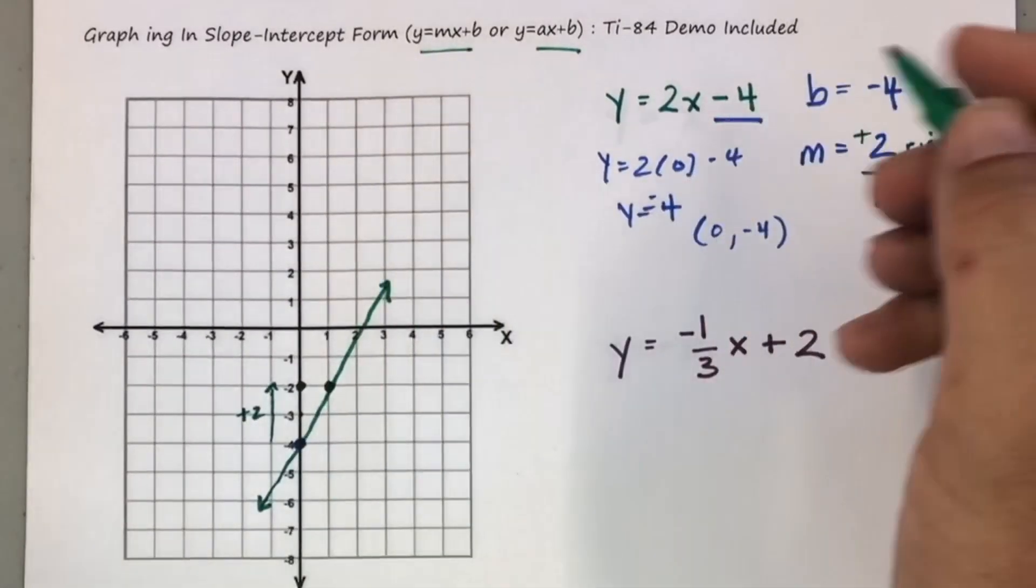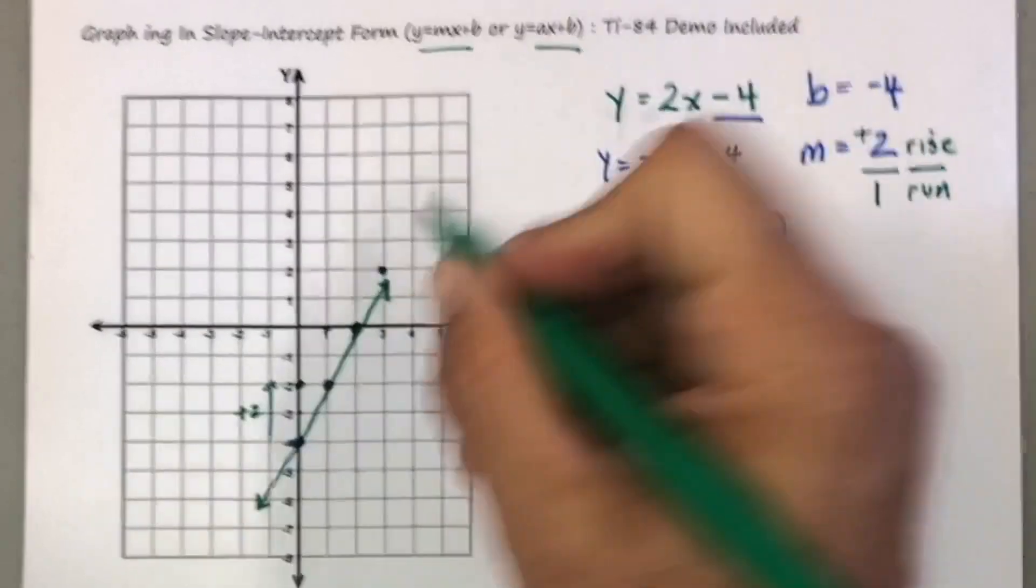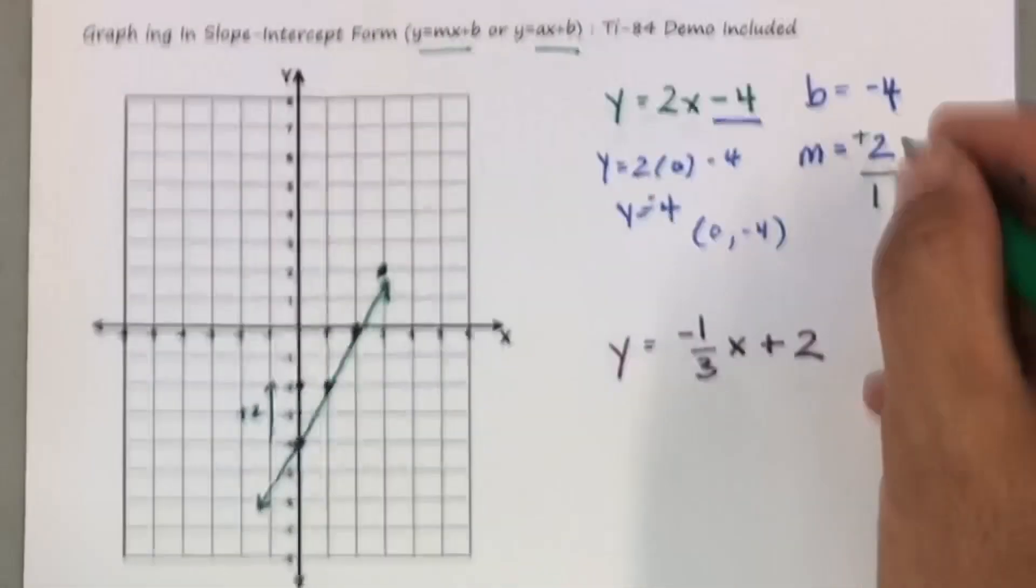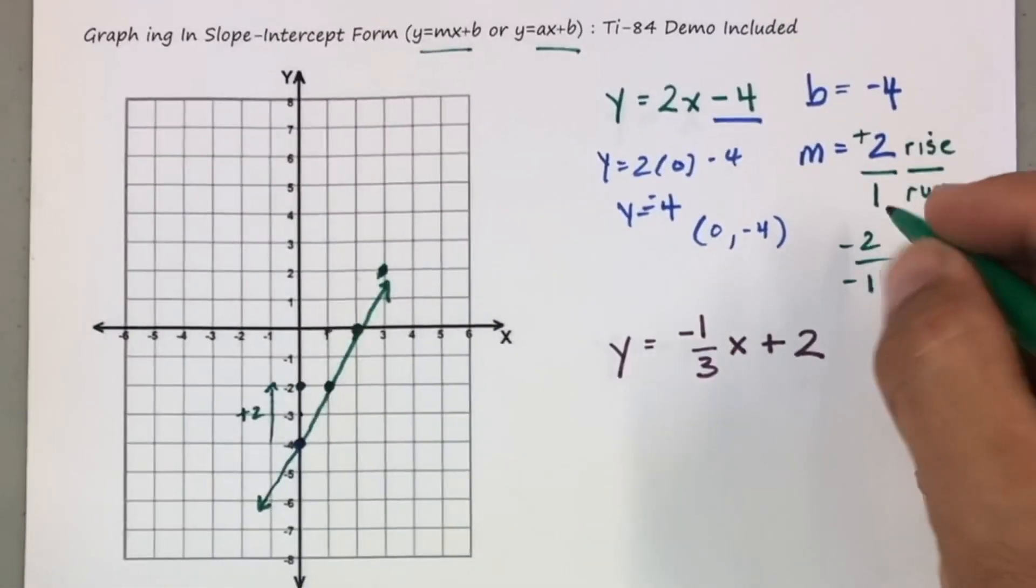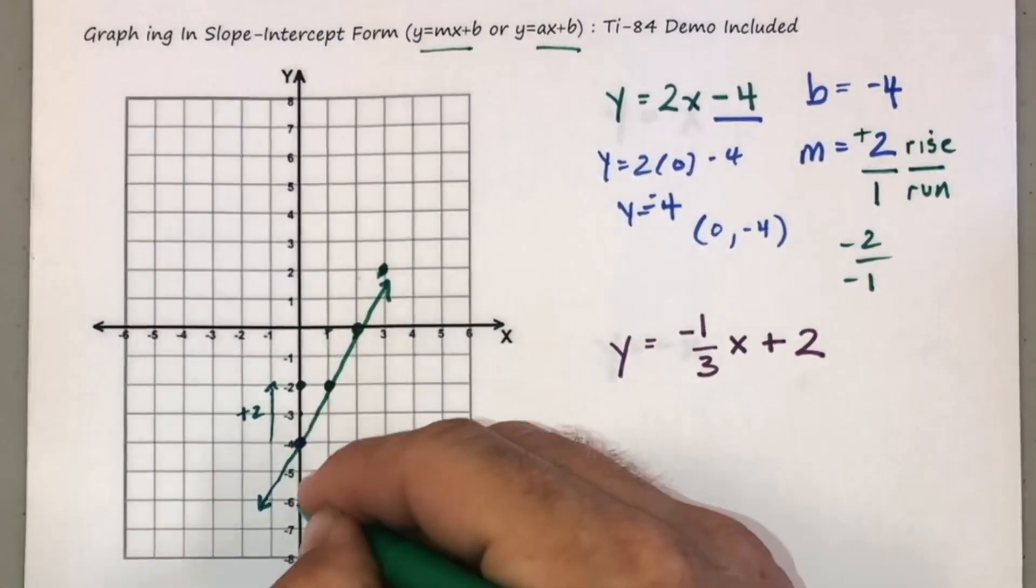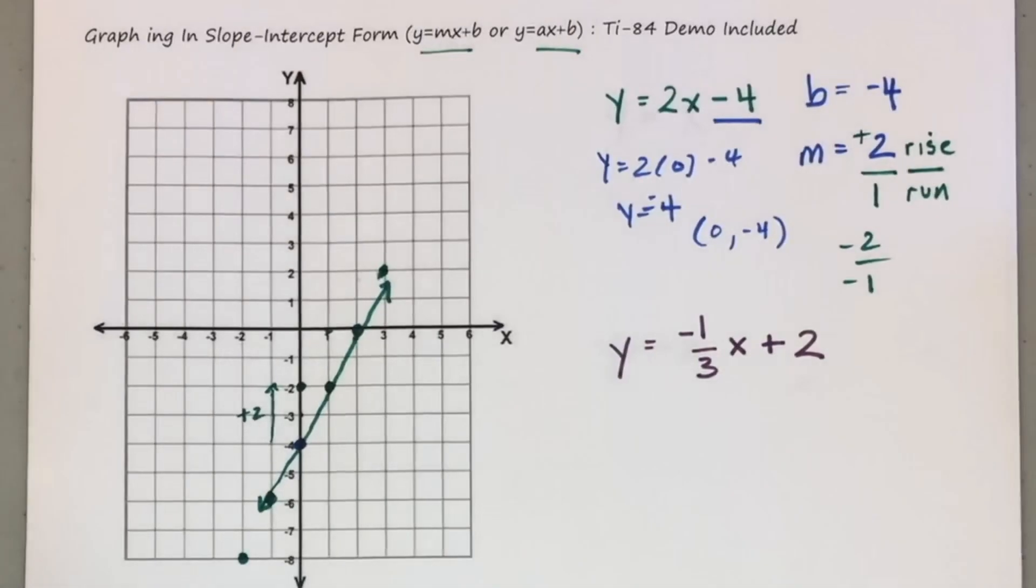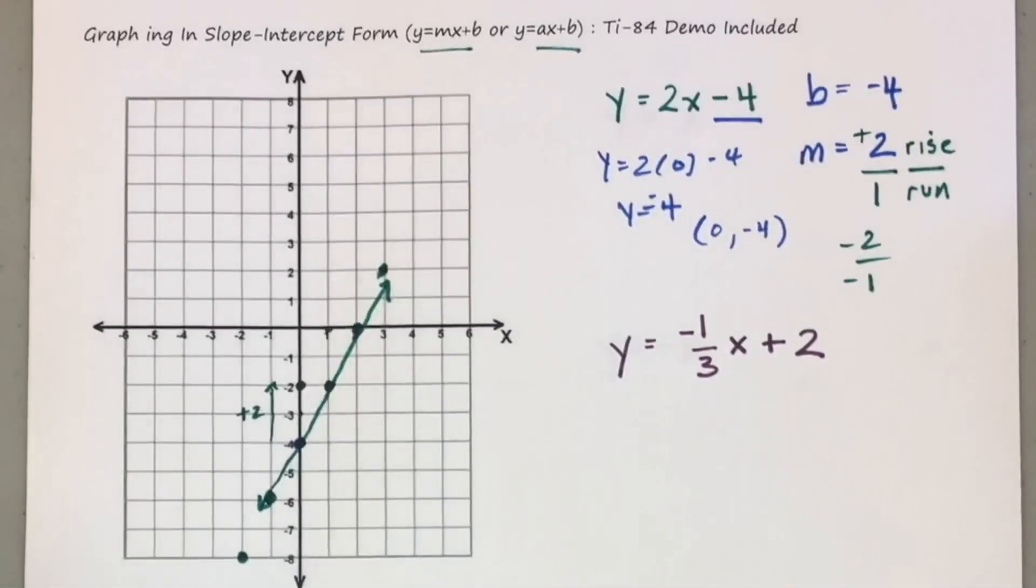Now if you want to continue drawing this the right way, just go up two over one, up two over one, you see I'm a little off here, or I could go backwards, because positive two over one is the same as negative two over negative one. A negative and negative is a positive, so I could go down two over one, down two over one, and then kind of make my line there. Maybe I'll do that with the next one, so the line's a little bit better.